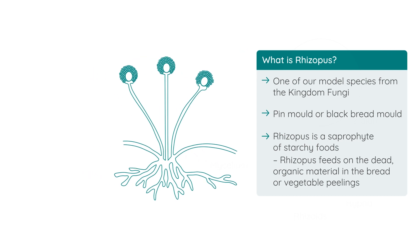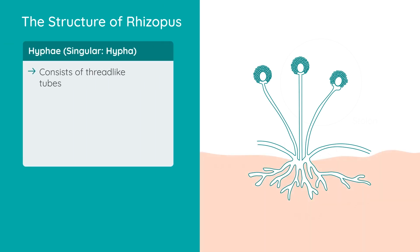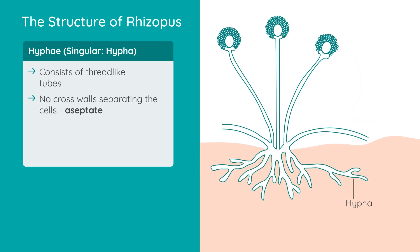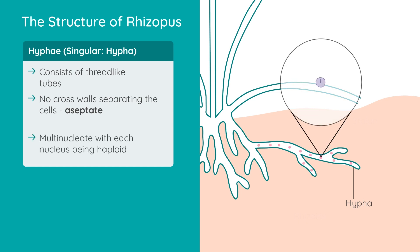Being a saprophyte means that Rhizopus feeds off the dead organic material in the bread or vegetable peelings. Rhizopus consists of thread-like structures called hyphae, with the singular being called a hypha. These hyphae are tubular and they do not have cross walls separating the cells, which means that they are aseptate. Hyphae are multinucleate, with each nucleus being haploid.